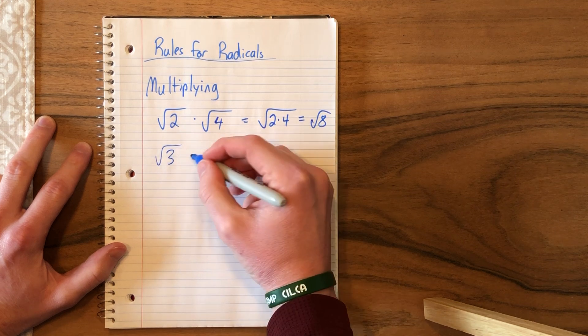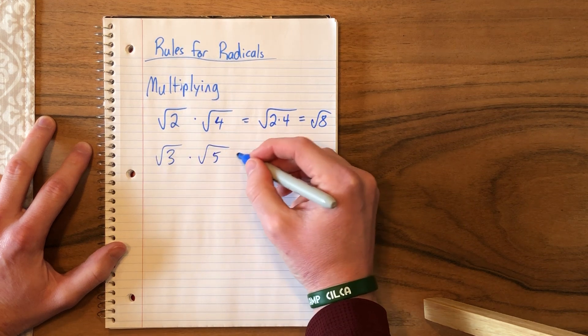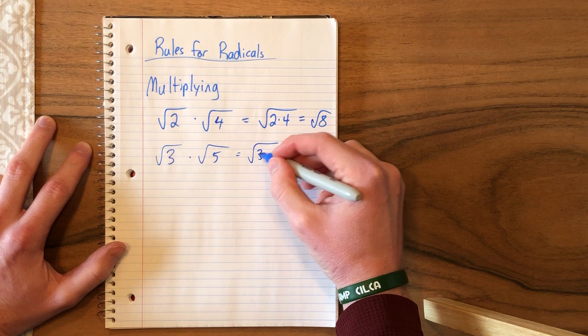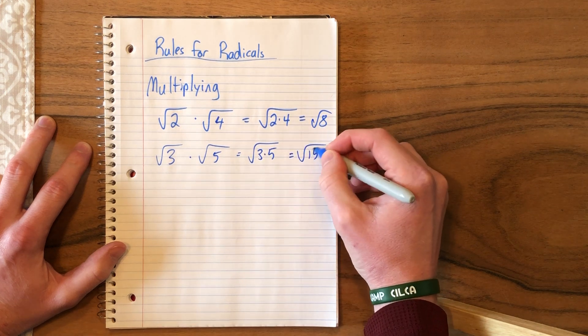Same thing if you had the square root of 3 times the square root of 5, multiply the numbers underneath, and you get the square root of 15.